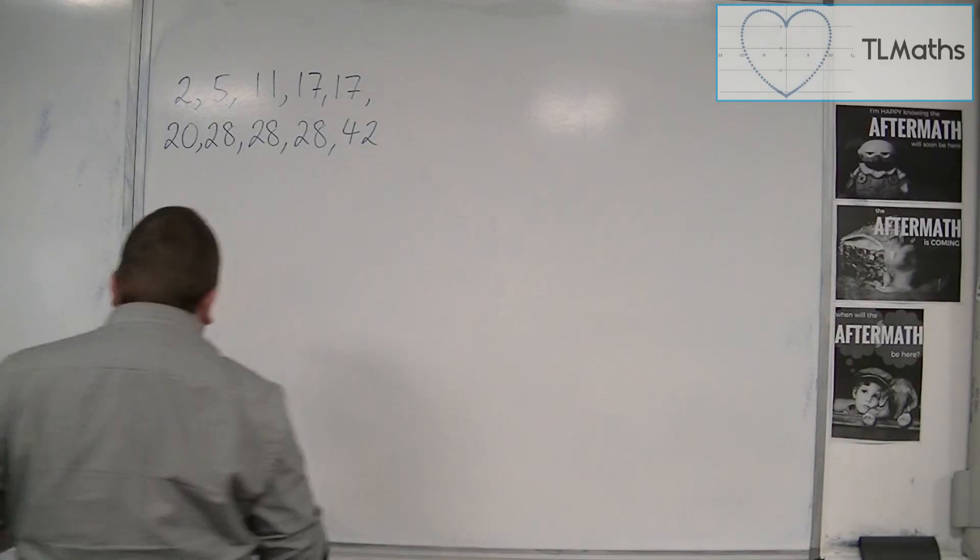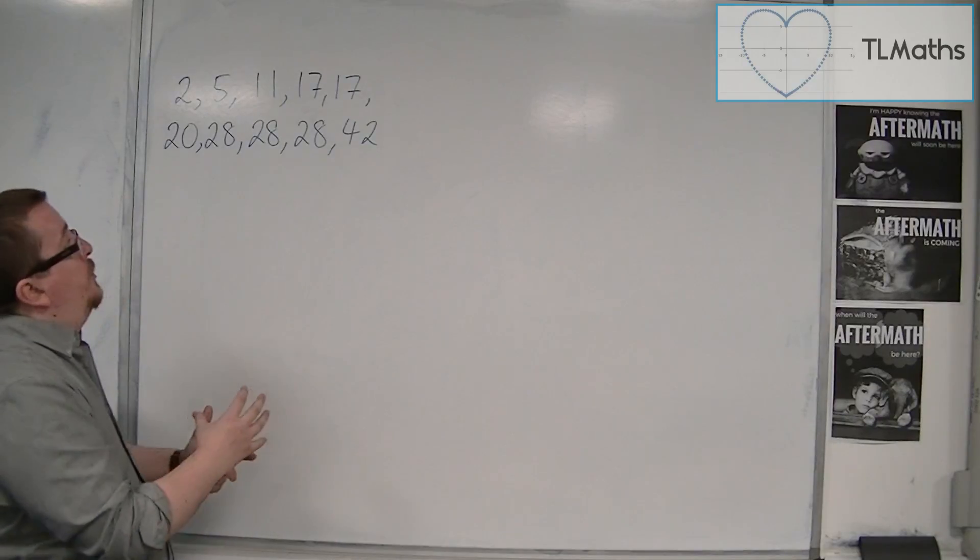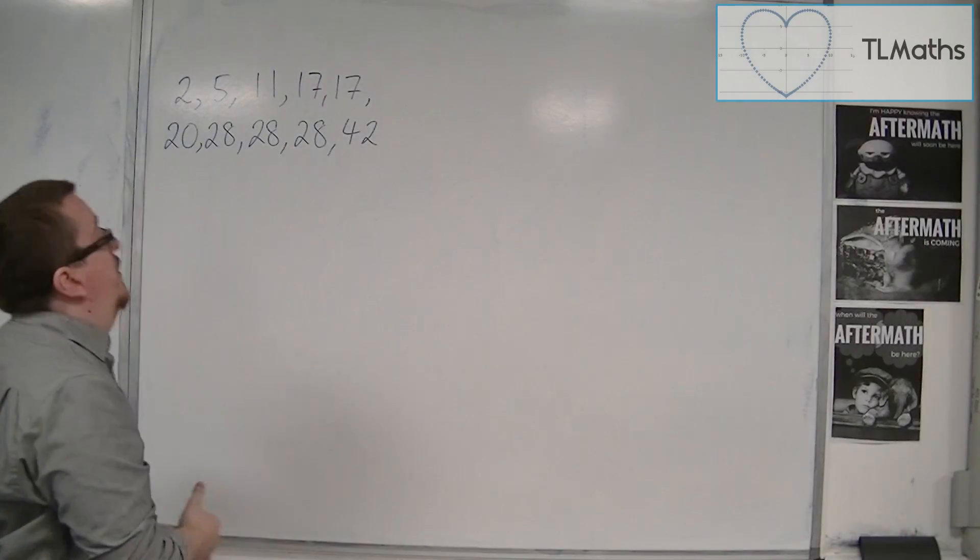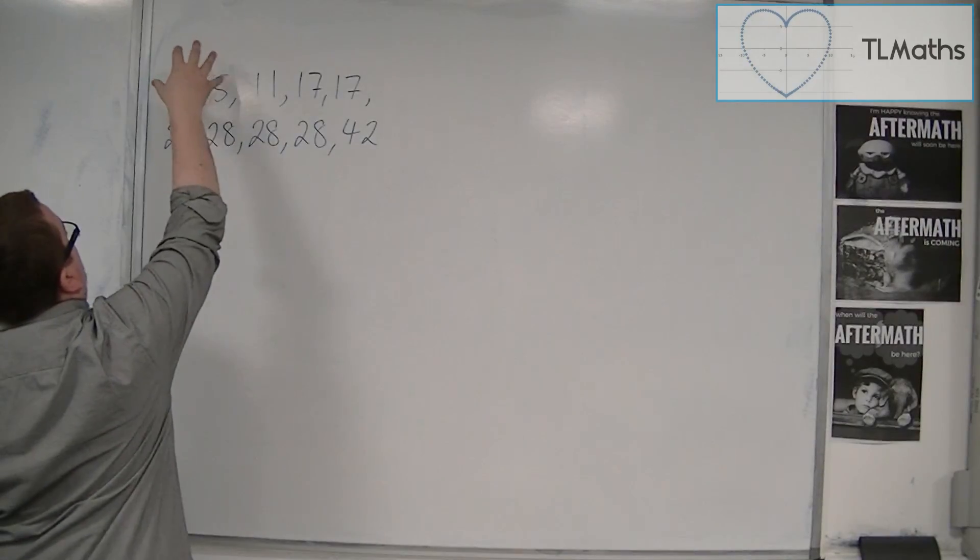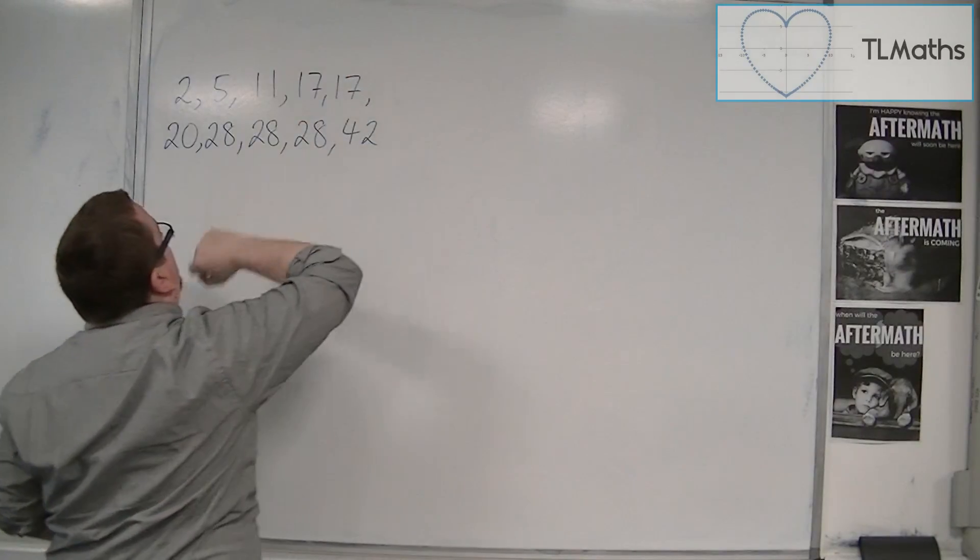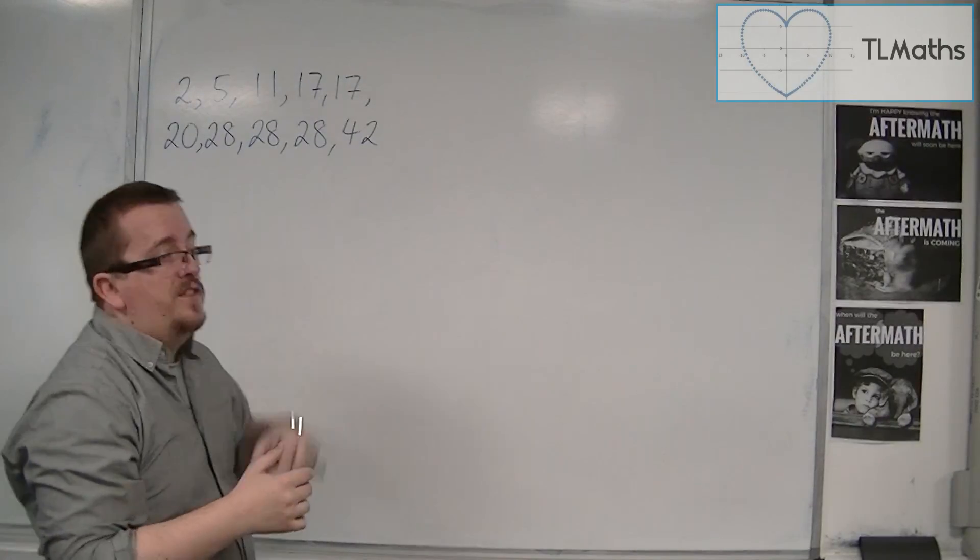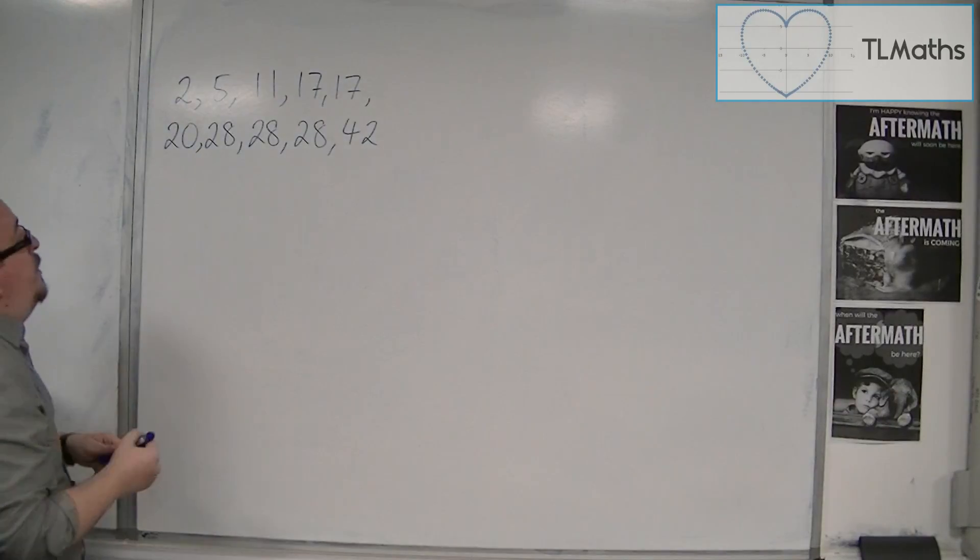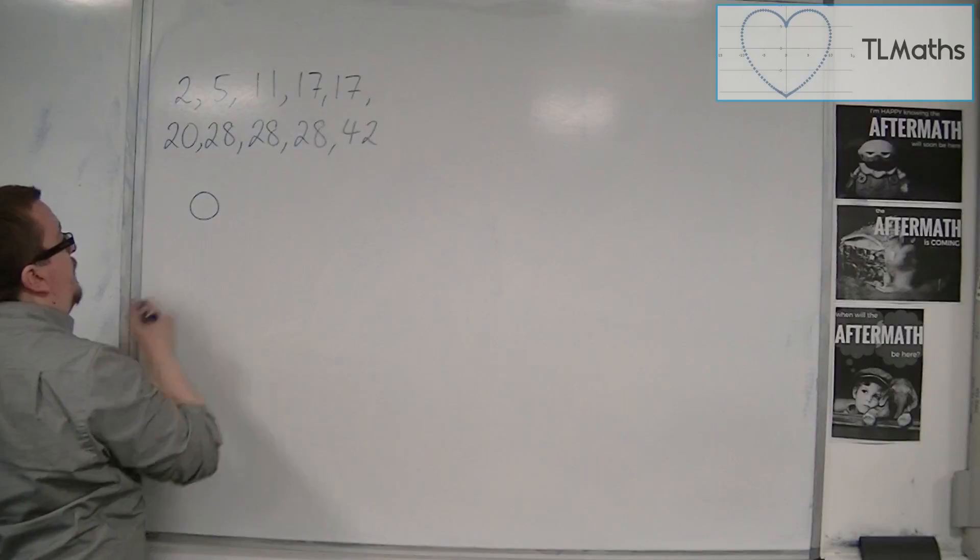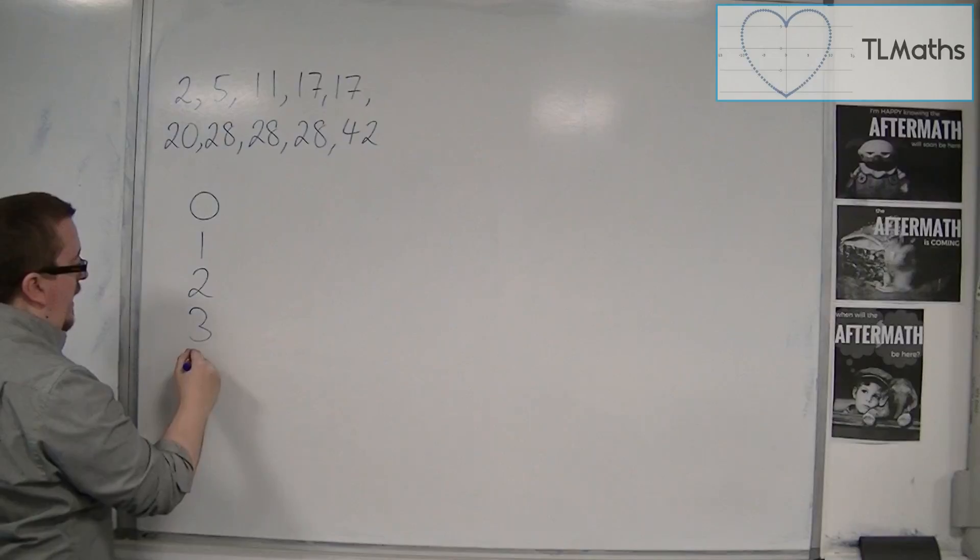So how this works is that you set up the data into, well in this case, you would put it into tens. So we've got 0 to 9, for example, and then we've got 10 to 19, and then we've got 20 to 29, and then we've got this 42 left stuck on the end. So you would have the single units, we're going to represent them with zeros, and then we're going to have the tens and the twenties and the thirties and the forties.